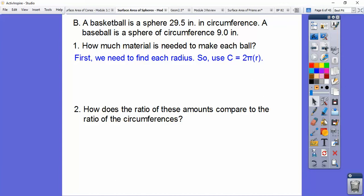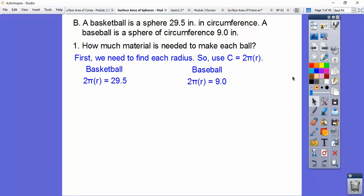Circumference is 2πr. So we'll set 2πr equal to each of these circumferences. We'll come back to the other question right here. We're solving for r. We need to find the r so we can use our formula, surface area is 4πr². Now we need this r.